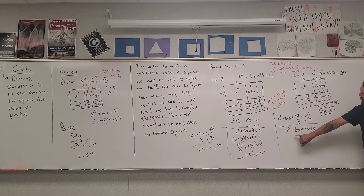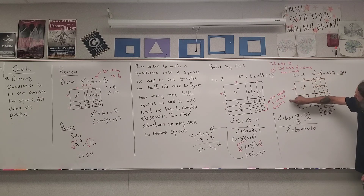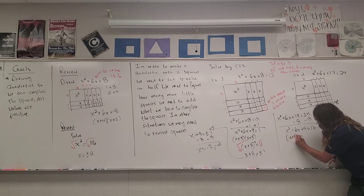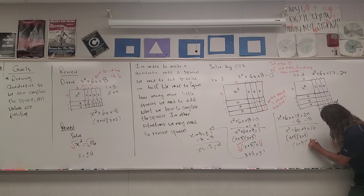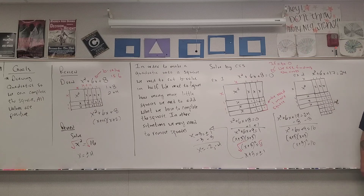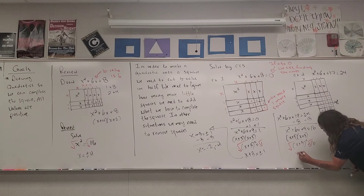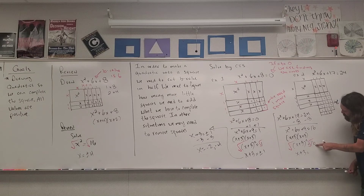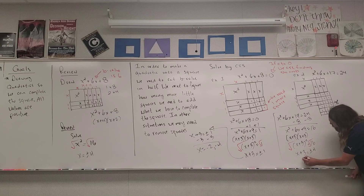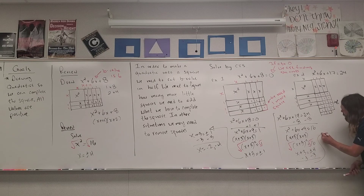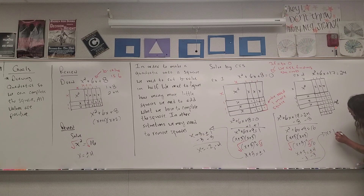This quadratic has side lengths of x plus 3 and x plus 3, so it becomes (x+3)(x+3), which is x plus 3 squared equals 16. The beautiful thing about turning a quadratic into a perfect square is it gets the square outside the parentheses. We square root both sides: x plus 3 equals plus or minus 4. Subtract 3 from both sides: negative 3 plus 4 gives x equals 1, and negative 3 minus 4 gives x equals negative 7.